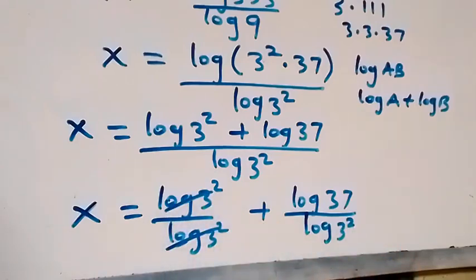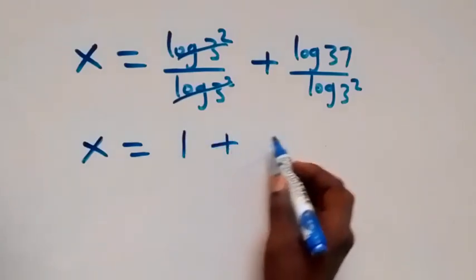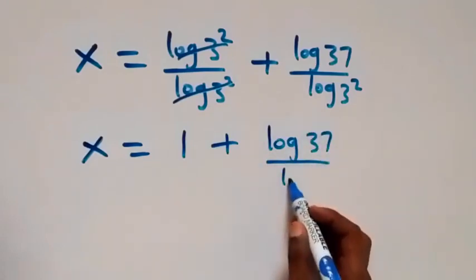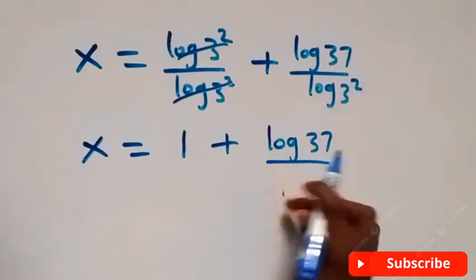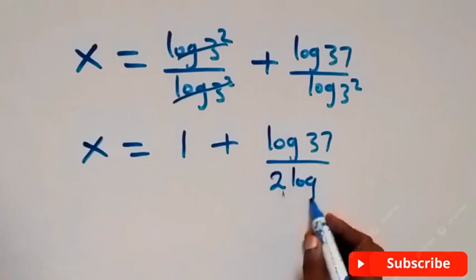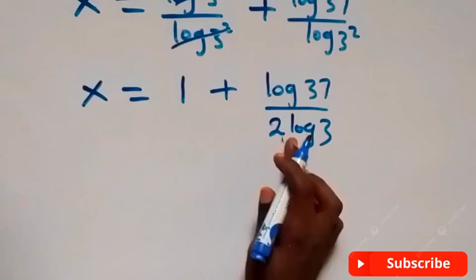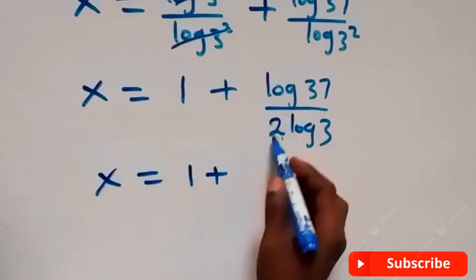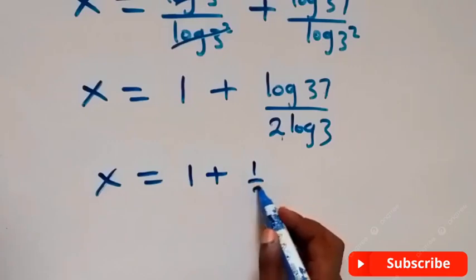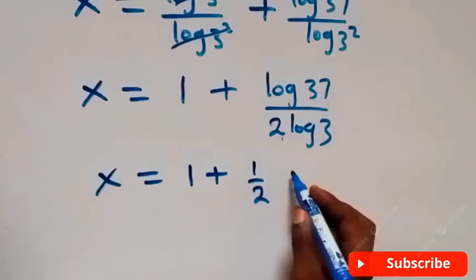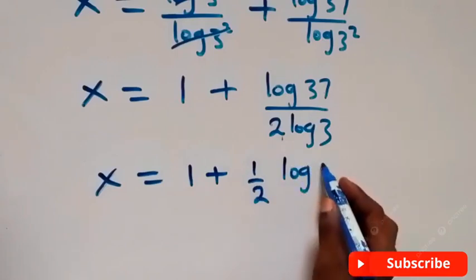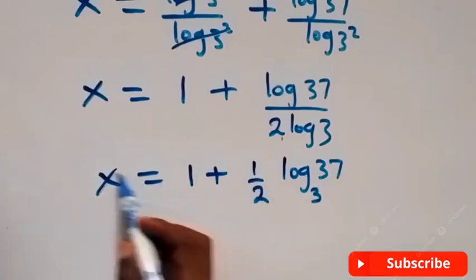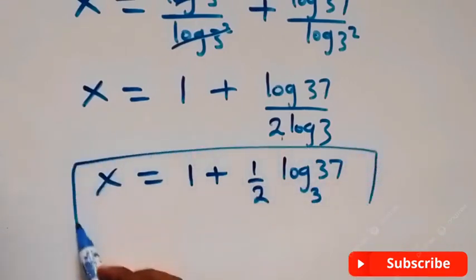The log 3 squared terms cancel, leaving 1. So x equals 1 plus log 37 over log 3 squared. Applying the power rule, the denominator becomes 2 log 3. Separating out the half and applying change of base, we get the final answer: x equals 1 plus one-half times log base 3 of 37.